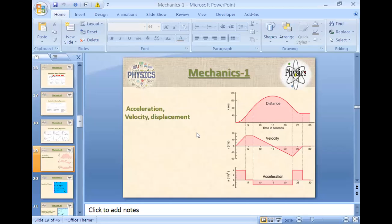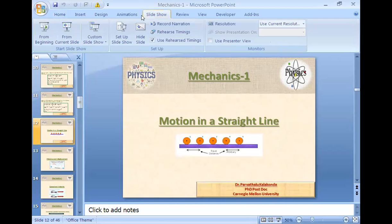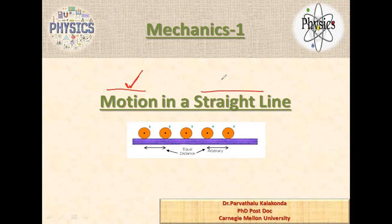Okay, I have some slides here — let me focus them. So, motion in a straight line. What is motion in a straight line? What do you understand by this term? Motion means change in distance or displacement. Straight line means motion along one line — the motion is confined to a single direction.